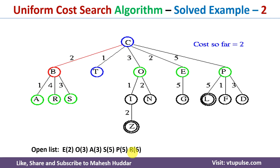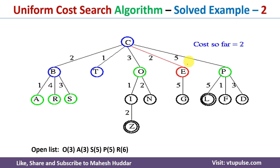We add all those paths into the open list in ascending order. We haven't reached the goal node yet, so we select the first node from the open list again, which is E2. We remove it and explore E. The cost to reach G from E is 2 plus 5, which equals 7, and that is added into the open list.